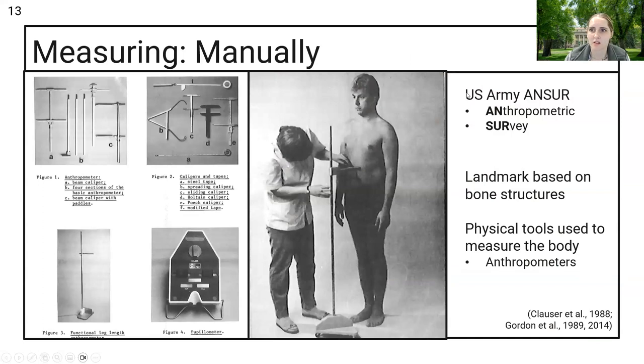There are a few ways to measure anthropometrics. The US Army does ANSUR surveys - anthropometric surveys. They use manual measuring methods or anthropometers. These technicians that do the measuring are trained by the people conducting the survey. Mainly, they feel for bony landmarks based on bone structures, and then from there they can find where the waist is or where the chest circumference should be measured.